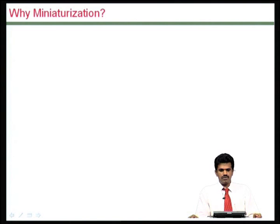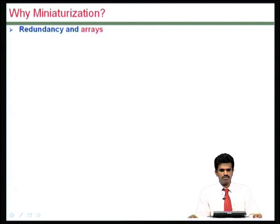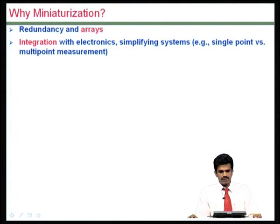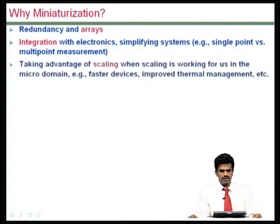First, let us have a relook at why miniaturization is required in this context. One key reason is redundancy — when you have arrays, this becomes an important feature. Another important aspect is integration with electronics: when you build these mechanical or electro-mechanical parts, they can be integrated with the required electronics, which simplifies the system and enables multipoint measurements.